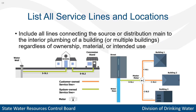When making a list of your service lines, the inventory should include all lines that connect the source or water main to each building in the system, regardless of ownership, material, or intended use. This means including customer-owned lines, non-lead lines, fire services, as well as lines serving commercial buildings and vacant or abandoned properties. Basically, if it is connected to the distribution system and to a building, or could be connected to a building in the future, please include it. Even if the information is repetitive, all lines must be individually inventoried.